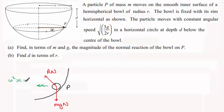So in other words, that's going to be 3g over 2r times x.